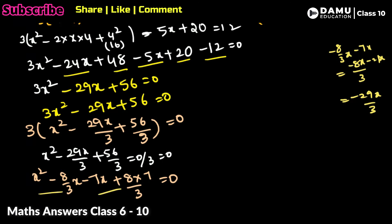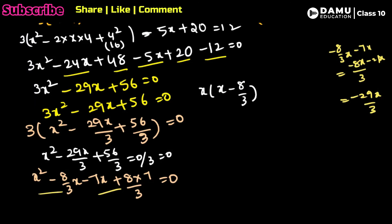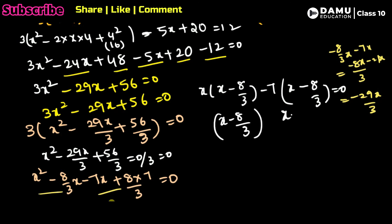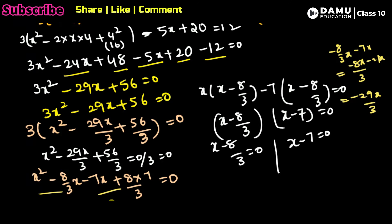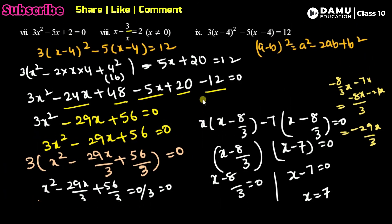Grouping: take common x giving x(x - 8/3), and take common -7 giving -7(x - 8/3). Since minus × minus = plus, we get (x - 8/3)(x - 7) = 0. Either x - 8/3 = 0 giving x = 8/3, or x - 7 = 0 giving x = 7. These are the two roots. Thanks for watching, please subscribe.